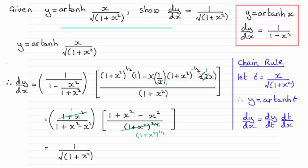Now because I've got a negative power here, I decided to multiply top and bottom by 1 plus x squared to the power half.